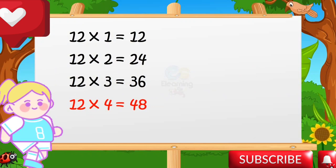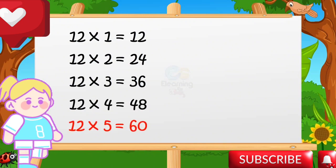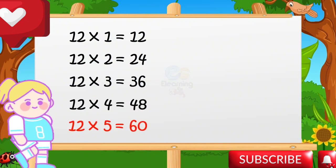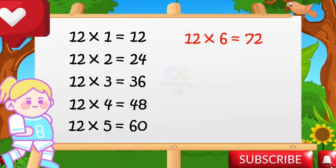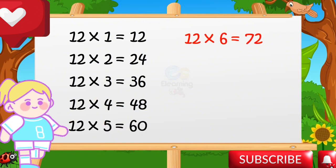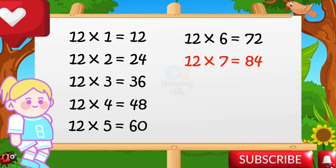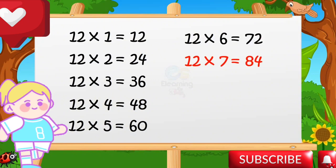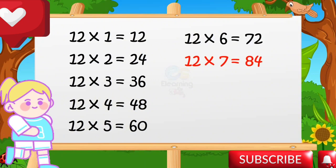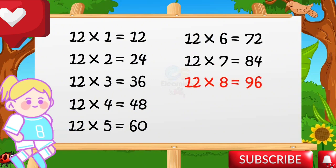12 fours are 48. 12 fives are 60. 12 sixes are 72. 12 sevens are 84.